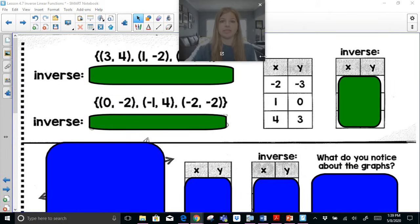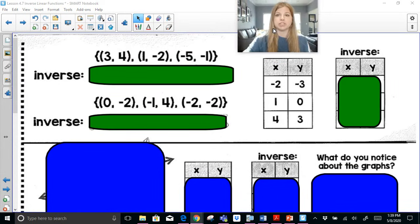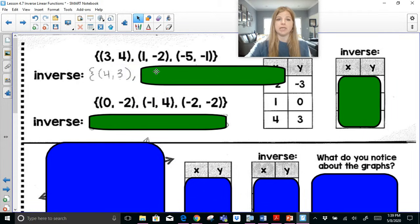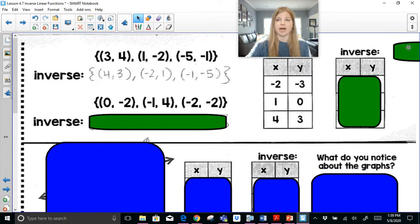So if I gave you these relations here and I said calculate the inverse, the inverse here would be (4, 3), (-2, 1), (-1, -5).